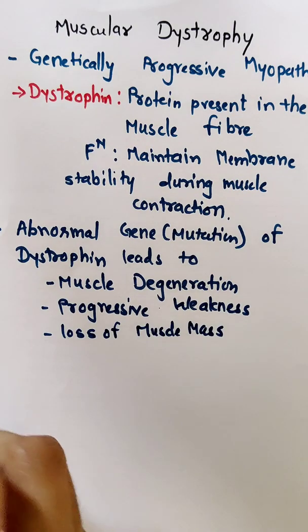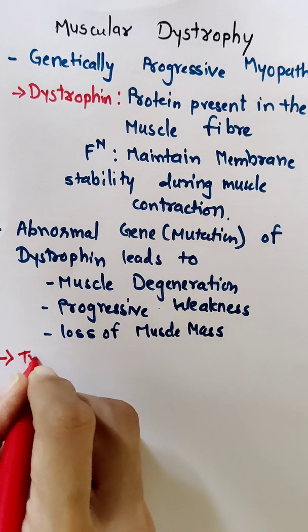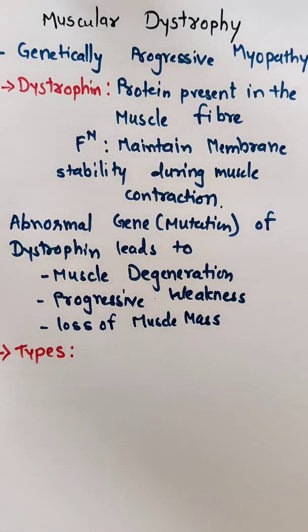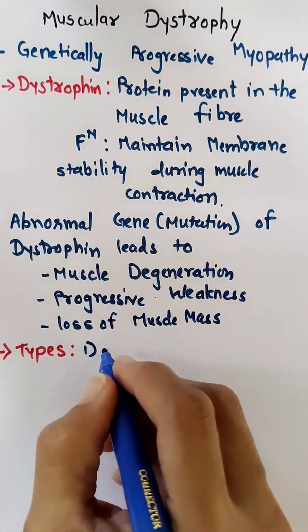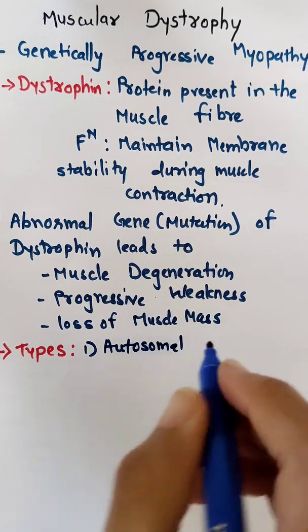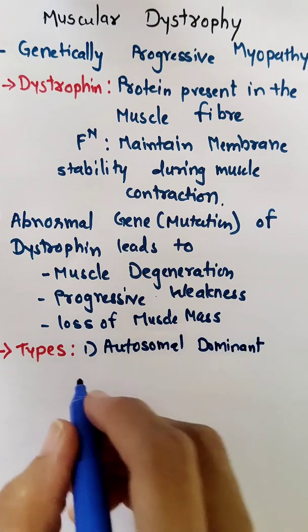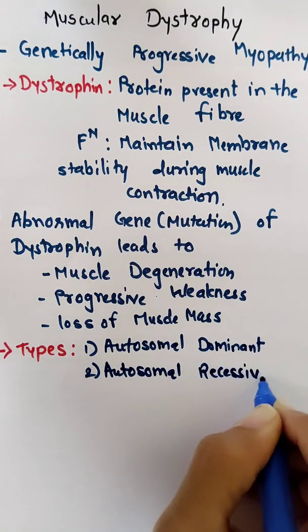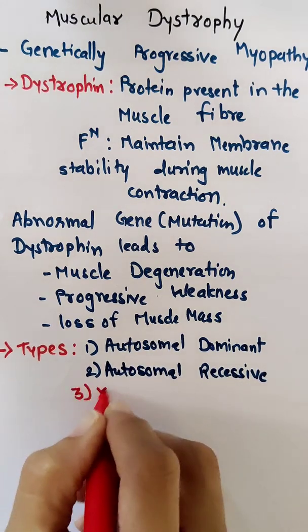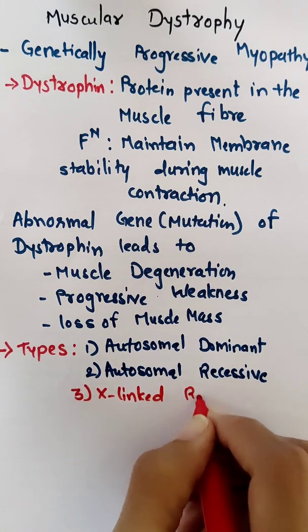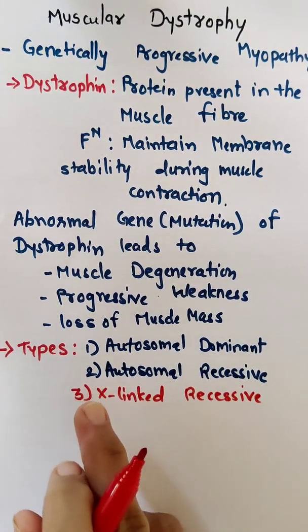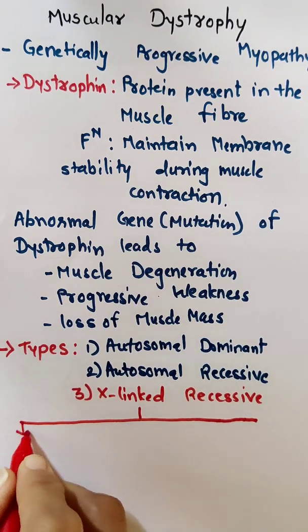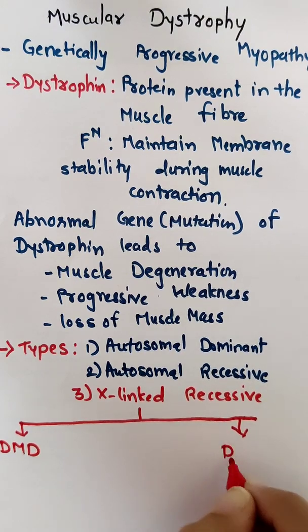There are mainly three types of muscular dystrophies: autosomal dominant, autosomal recessive, and X-linked recessive disease. Today we discuss the X-linked recessive muscular dystrophy, which is further divided into two types: DMD and BMD.